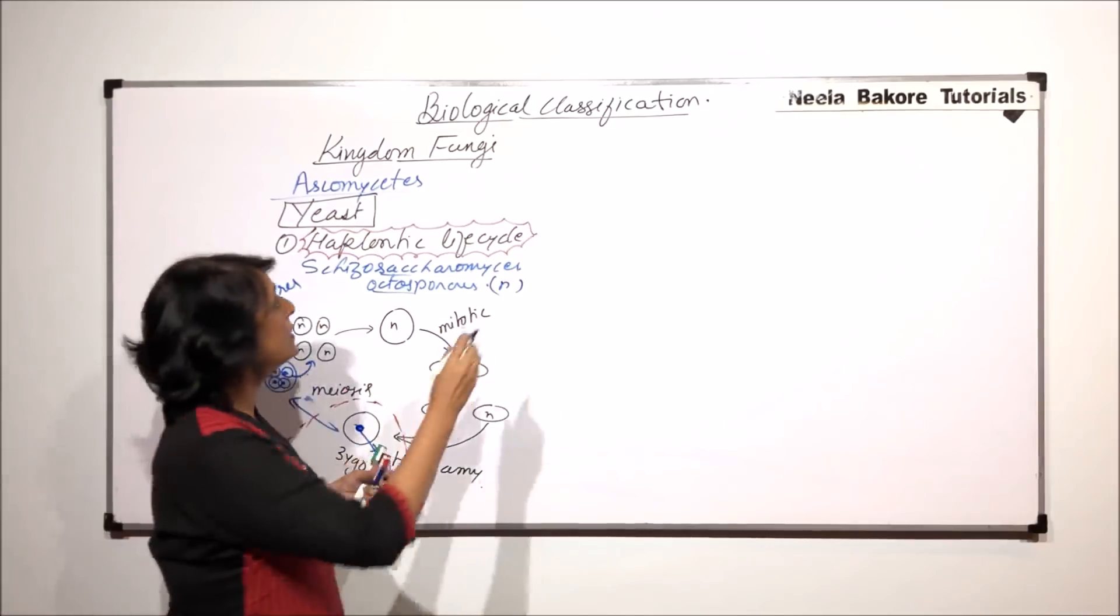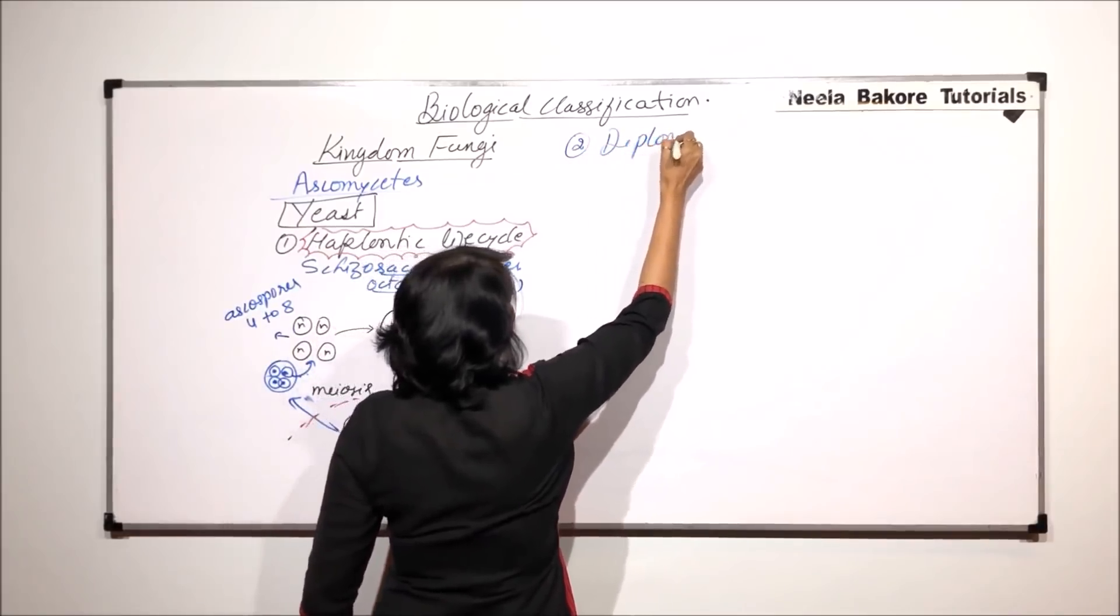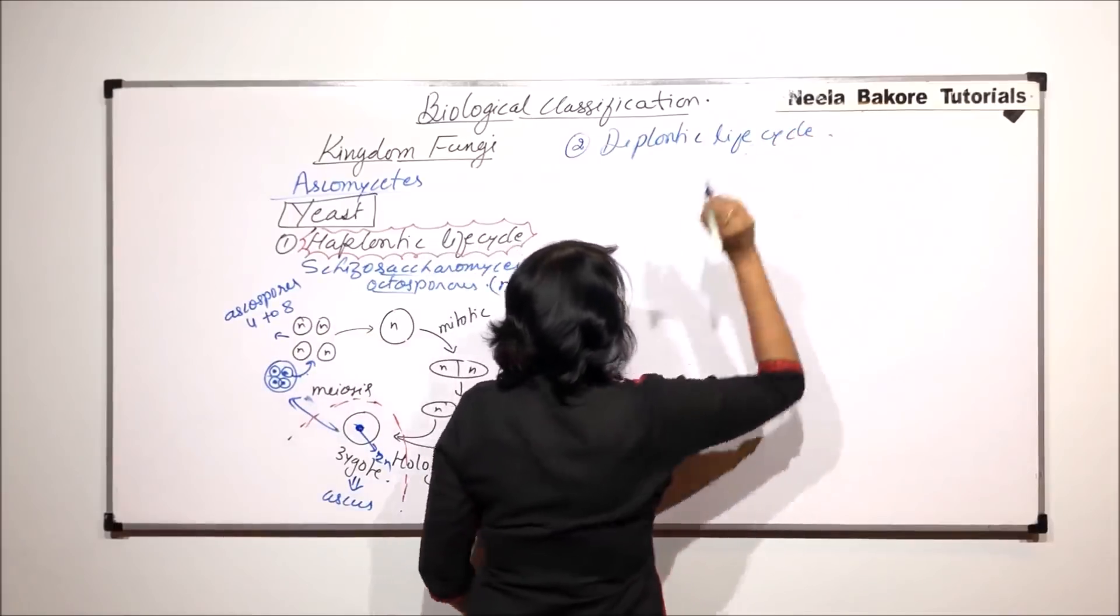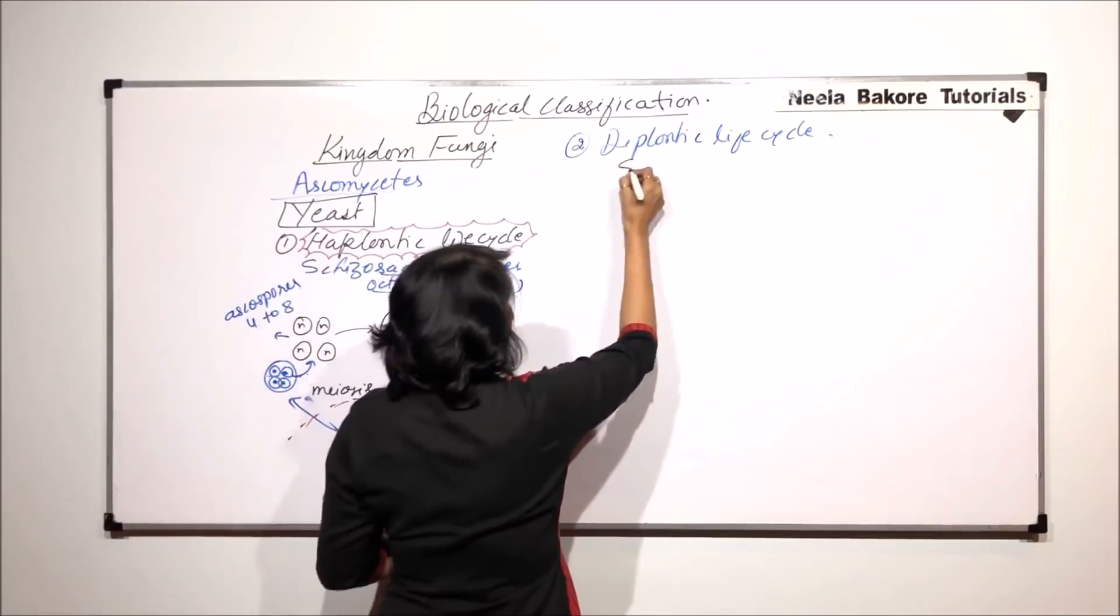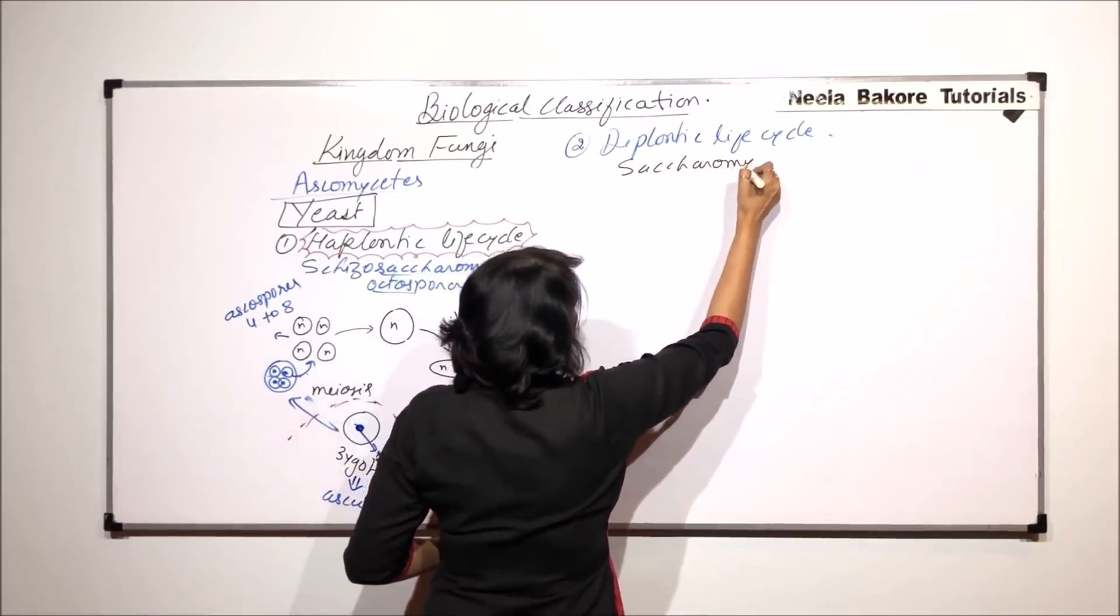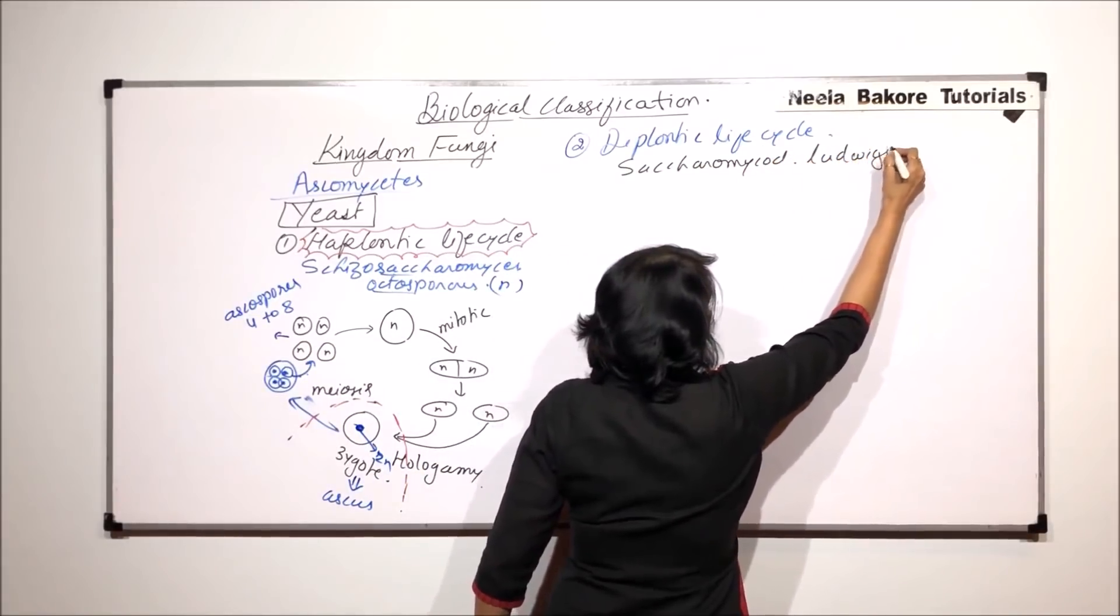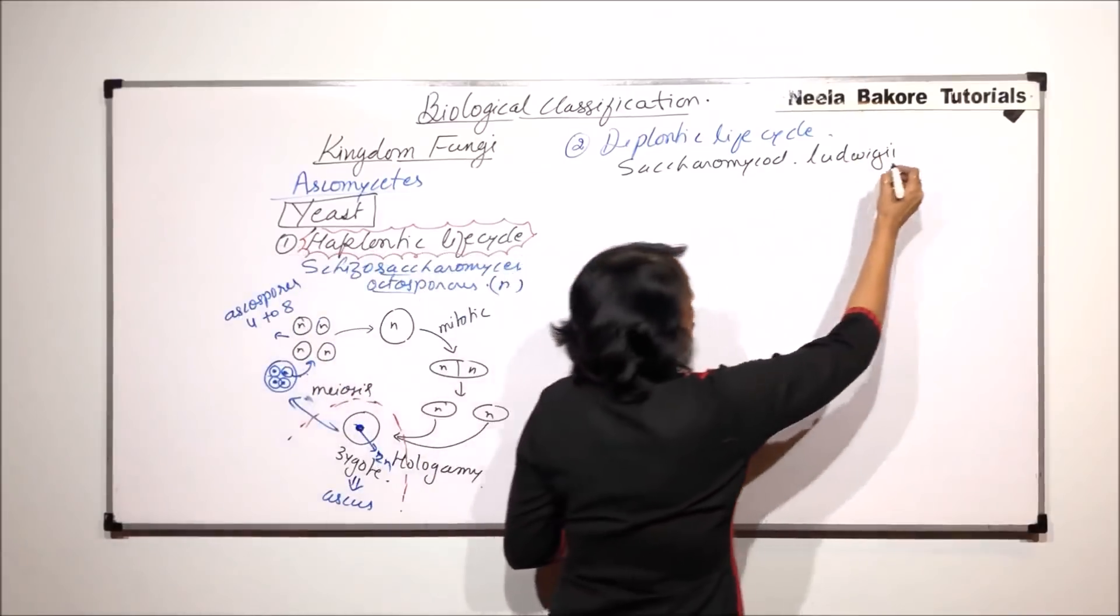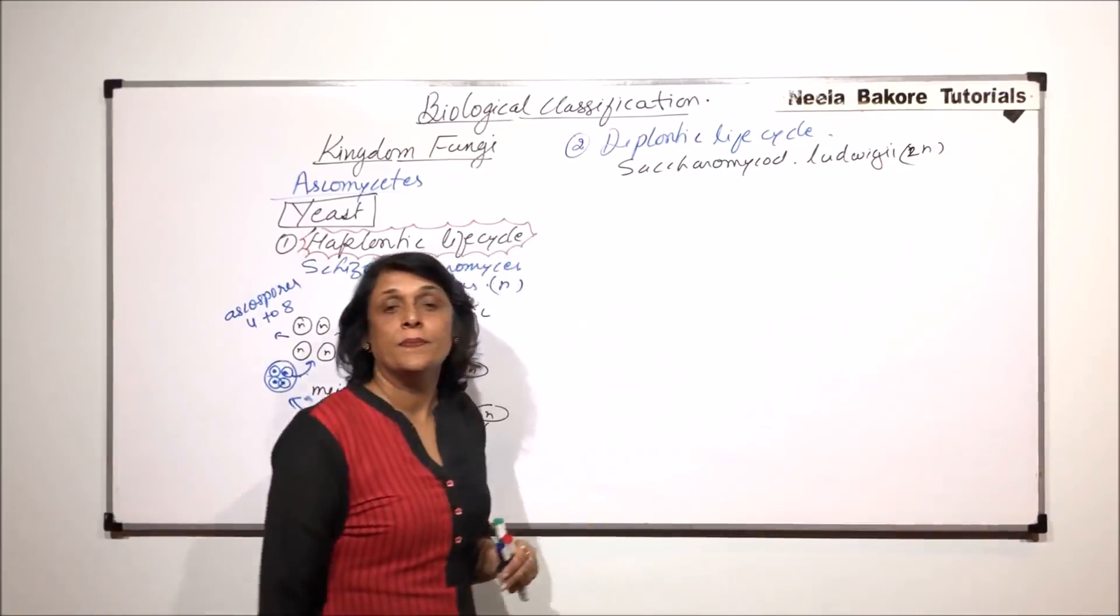Now let us talk about the second type, that is called the diplontic life cycle. Diplontic life cycle is seen in the species Saccharomyces ludwigii. In this, diplontic life cycle is seen. The normal yeast is diploid yeast.